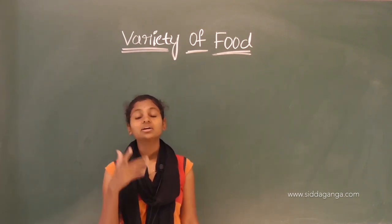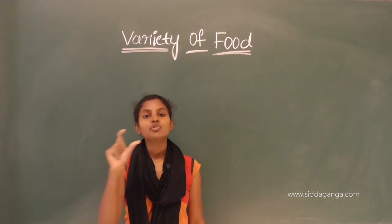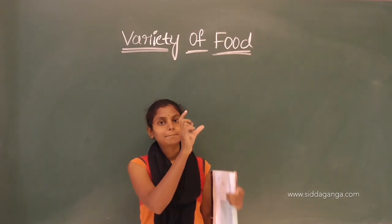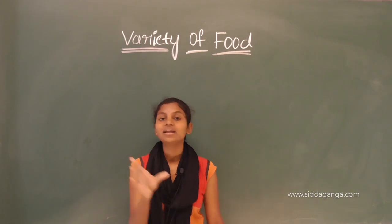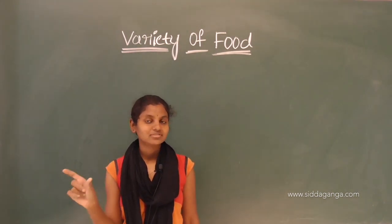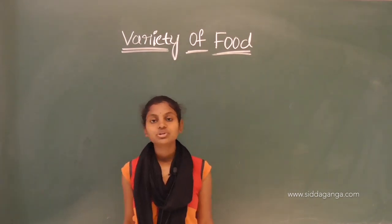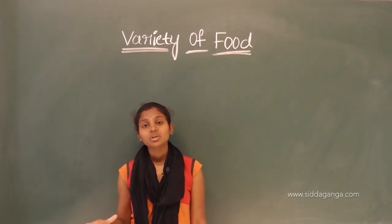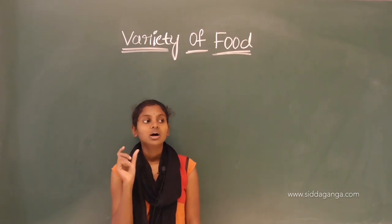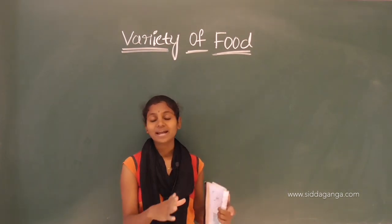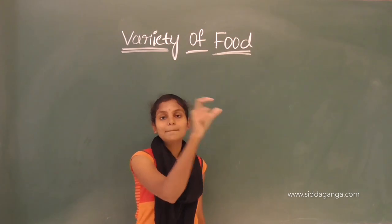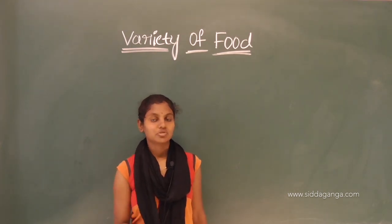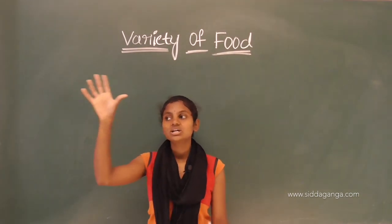Here is an activity. You have to make small pieces of paper and write the names of food items. Make two boxes — one for plant sources, where you paste a picture of a plant, and another box for animal sources, where you paste pictures of animals. You have to distribute the food name papers into the correct box. For example, if you write roti, roti comes from wheat which is a plant, so put that paper in the plant box. If you write fish, fish is an animal source, so put it in the animal box.